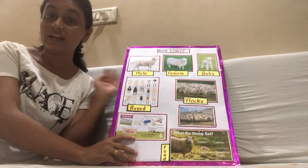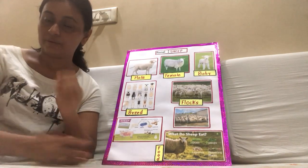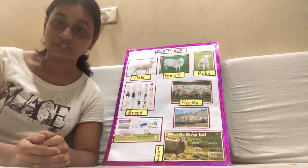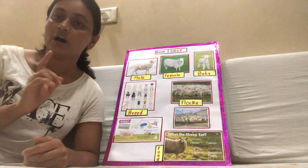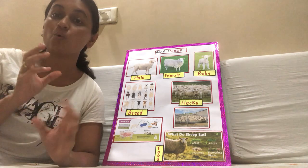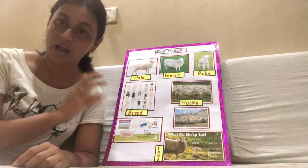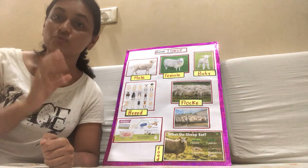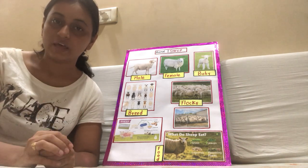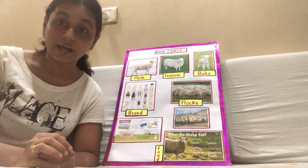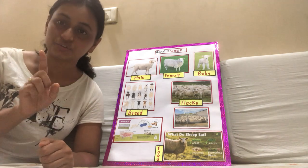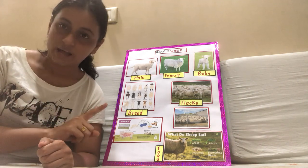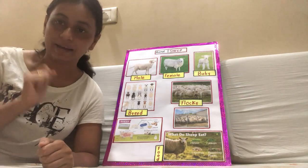Children, do you know there are three types of animals? Herbivorous, carnivorous and omnivorous. Herbivorous are those animals who only feed on plants. Carnivorous are those animals who feed on other animals. And omnivorous are those animals who feed on both plants and animals.